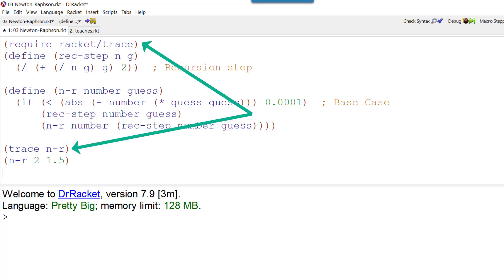Trace is quite useful. The require Racket/Trace imports the module trace into Racket. We can then set trace to trace what's happening with a particular function. So in this case we want to trace what's happening with the function n-r. Then we can run it. And when we run it we'll see how the function is handling itself.